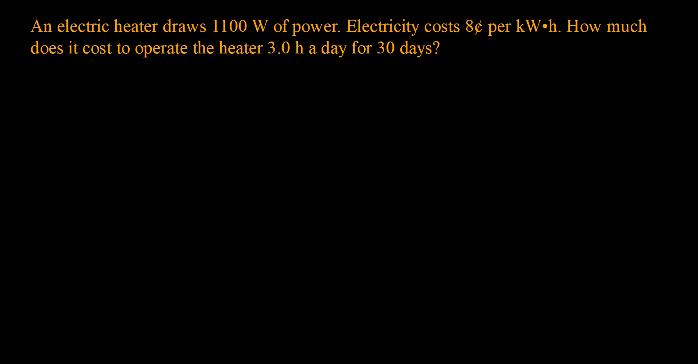Now let's go to another example. An electric heater draws 1100 watts of power. Electricity costs 8 cents per kilowatt hour. How much does it cost to operate the heater three hours a day for 30 days? So what I have here is the power, the price at 8 cents per kilowatt hour.